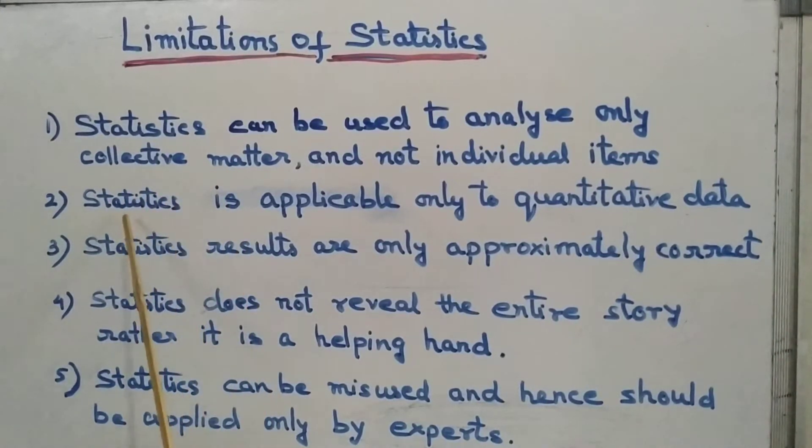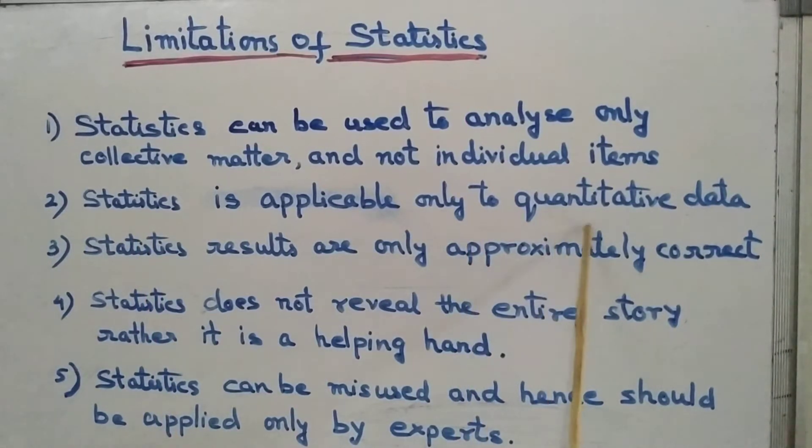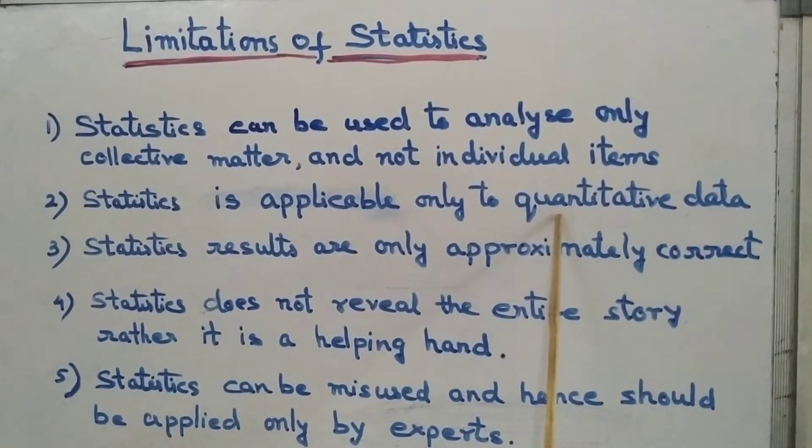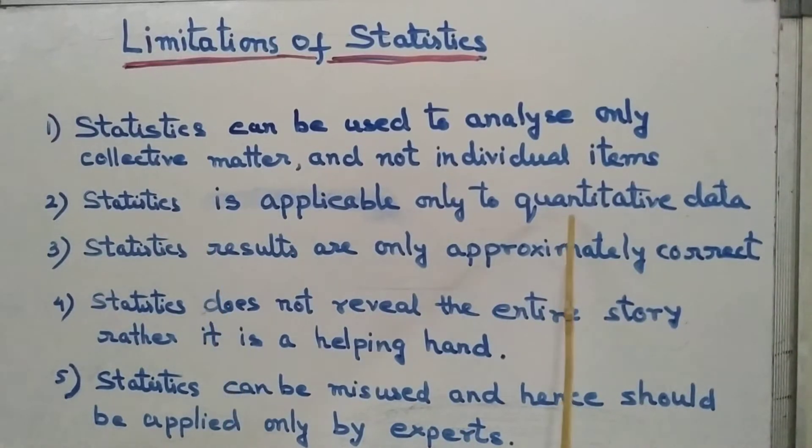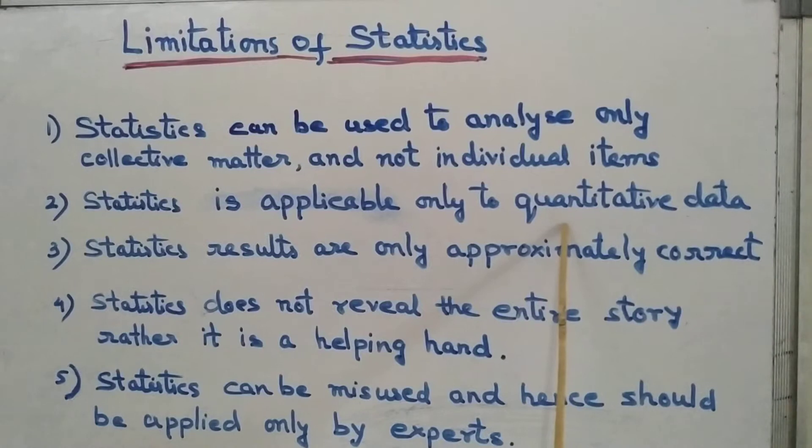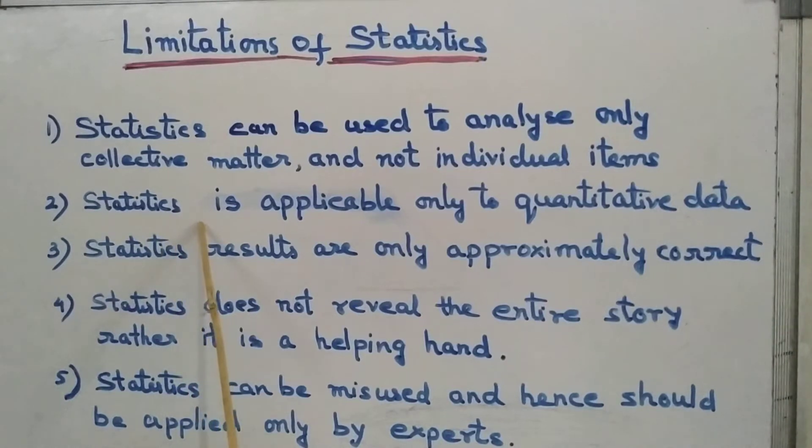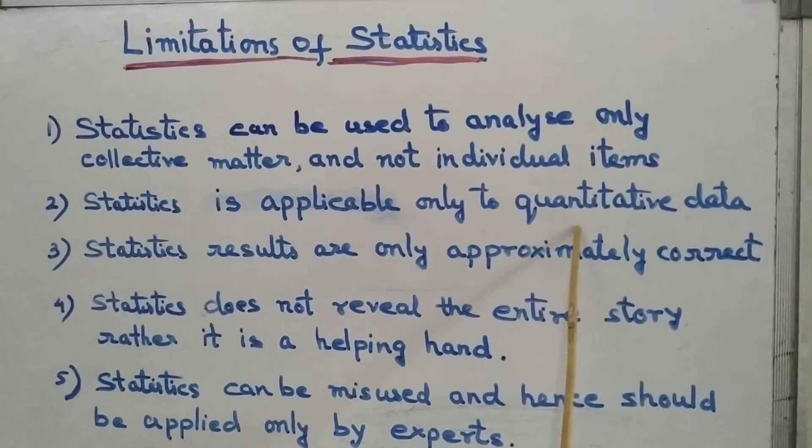That is, a set of data. The second limitation is that statistics is applicable only to quantitative data. Quantitative data means the data which are in numerical form. Statistical methods are applicable only to facts which are in numerical form or quantitative data. Statistical methods or tools cannot be applicable to qualitative data.